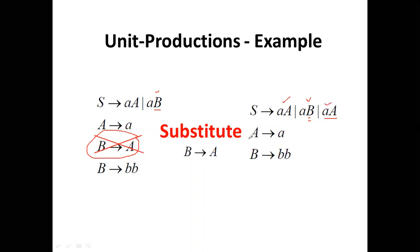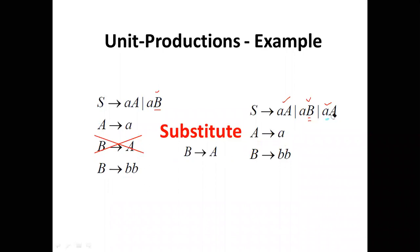All other productions remain the same. Now our aim is to remove the duplicate productions. S to aA appears as the same production twice. So now we have to remove this duplicate from our production set.